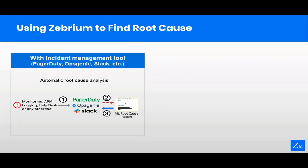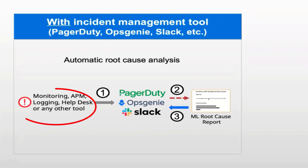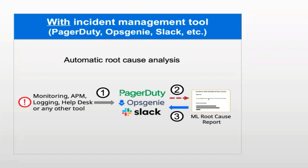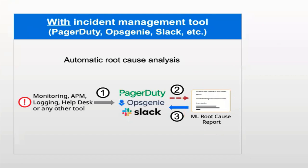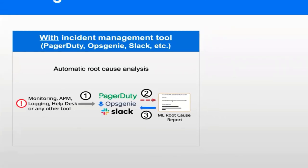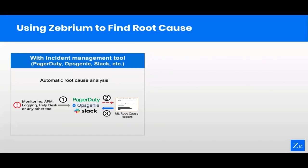There are two main ways you can use our machine learning. The first is when you have an incident management tool in place like PagerDuty, Opsgenie, or Slack. We have built-in integrations so when an incident is created in those tools, Zebrium automatically augments it with root cause. You'll probably have some kind of monitoring or APM tool in place — when that detects something, it opens an incident in PagerDuty. With our integration, as soon as an incident is opened, it sends us a signal and we respond with a root cause report very similar to what you saw in the UI demo, which shows up inside the PagerDuty incident.